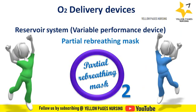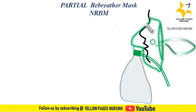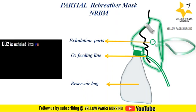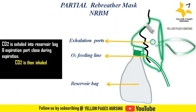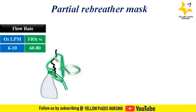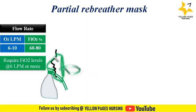The next variable performance device is the partial rebreather mask. It is similar to the non-rebreather mask, but the key difference is it does not have the one-way valves. Parts include exhalation ports, an oxygen feeding line, and a reservoir bag. The main function is that CO2 is exhaled into the reservoir bag, and side ports close during exhalation, so CO2 is then inhaled. Flow rate is 6 to 10 liters per minute, achieving FiO2 of 60 to 80%; a minimum of 6 liters per minute is required. Indications include short-term emergencies.